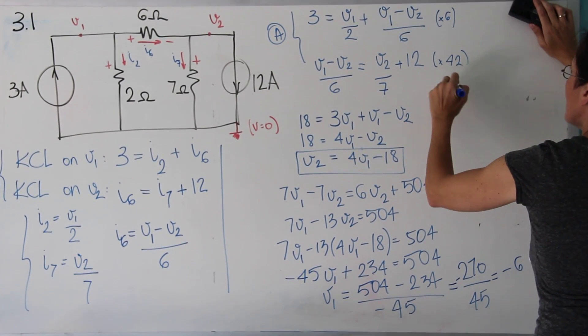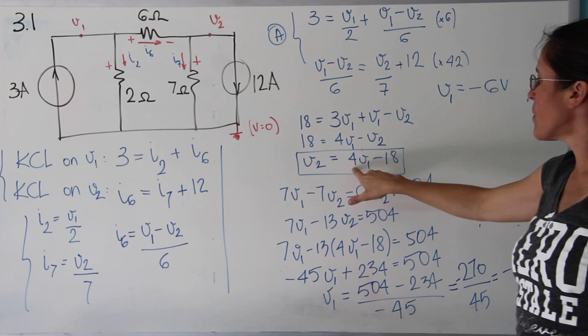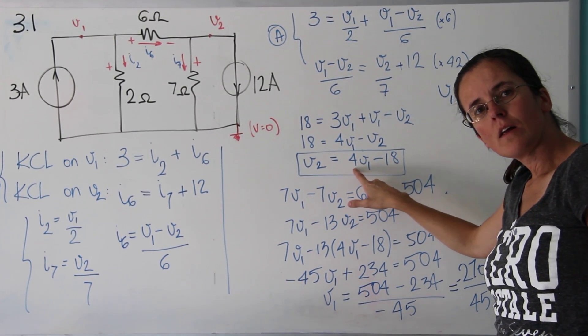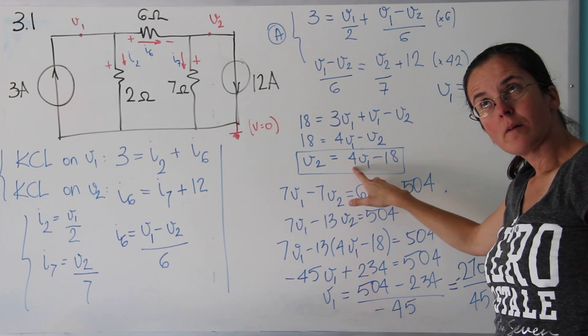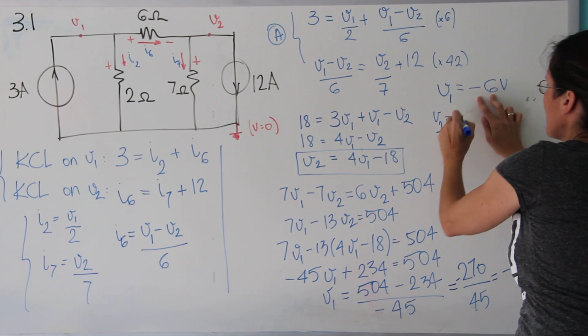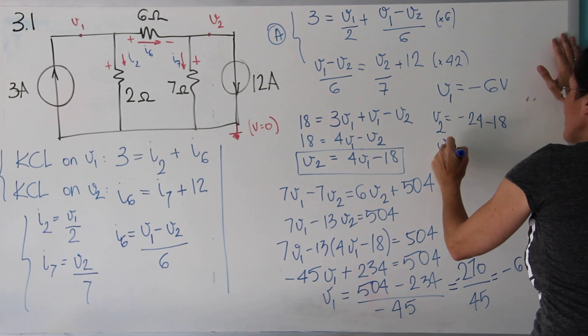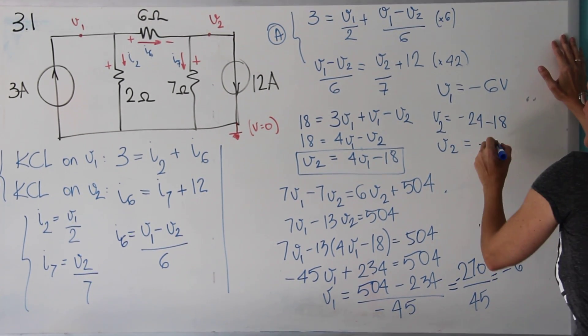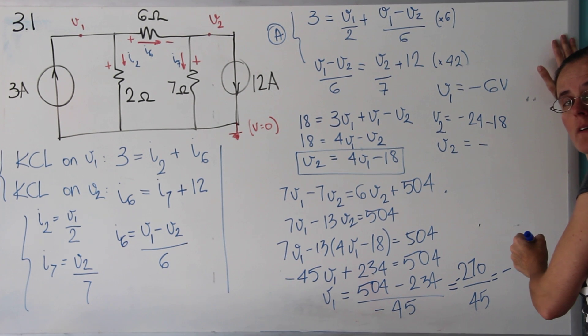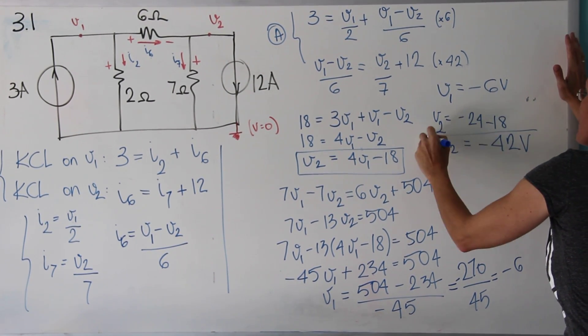Okay, we're almost there. V1 equals minus 6 volts. And now minus 6 times 4 is minus 24 minus 18. V2 equals minus 42 volts, I think.